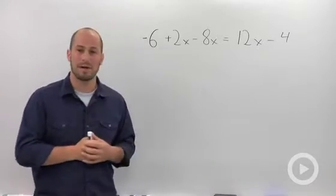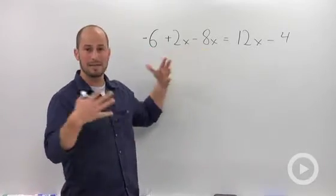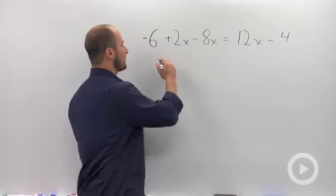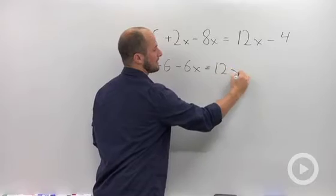How I tend to do these problems is simplify each side independently. So here we have a couple x's, throw those together. So plus 2x minus 8x will leave us with a minus 6x. And we didn't touch the other side so that stays the same.